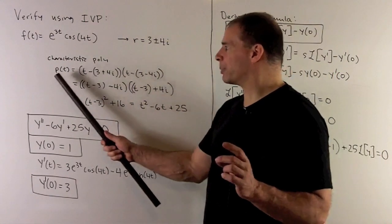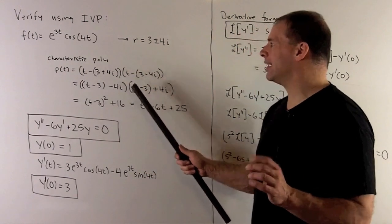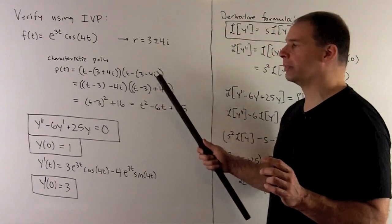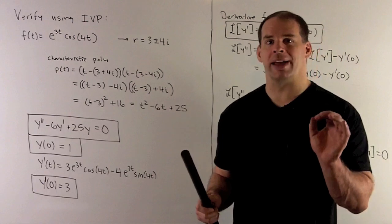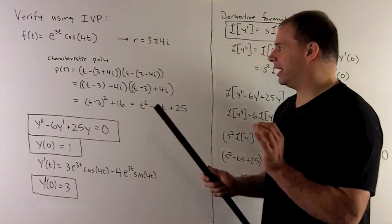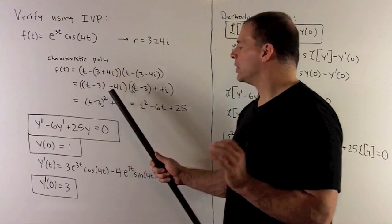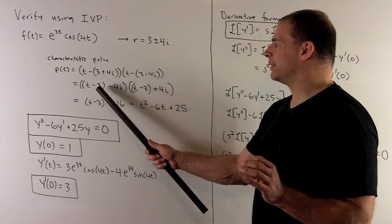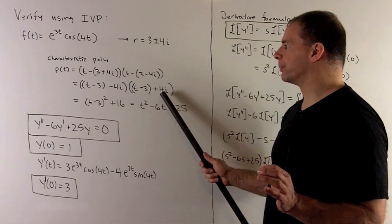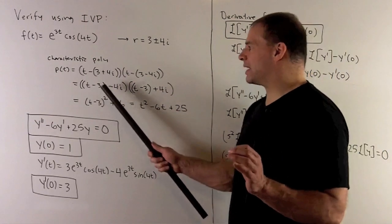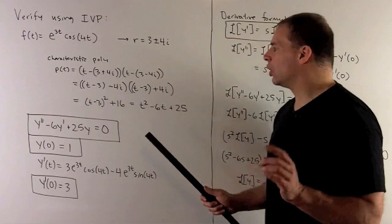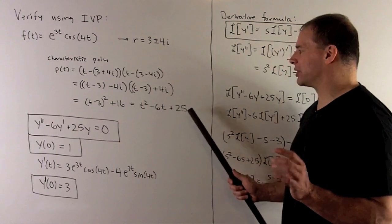Our characteristic polynomial is (r - root₁)(r - root₂). The quick way to multiply this out is to move the imaginary stuff away from the real stuff, so we regroup the parentheses. This is a difference of two squares, giving us (r-3)² plus 16, or r² - 6r + 25.